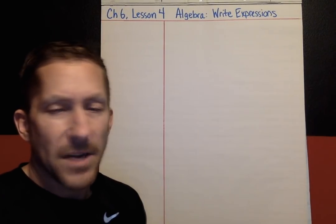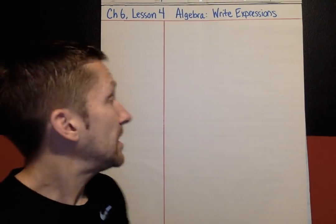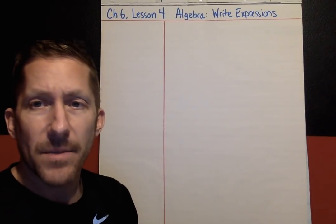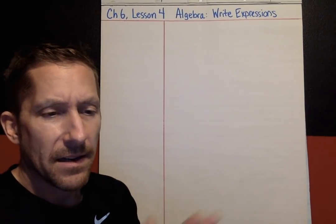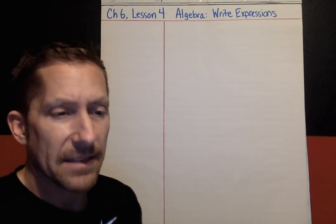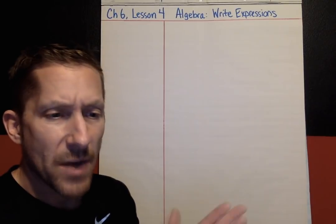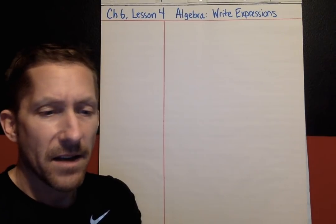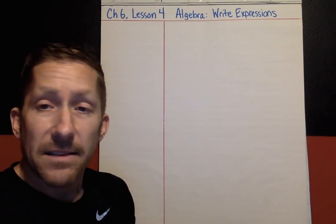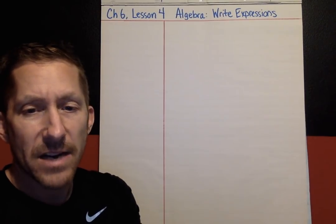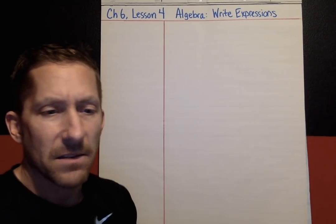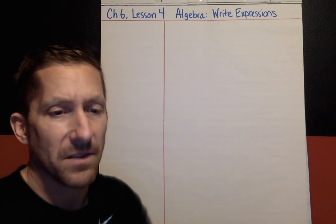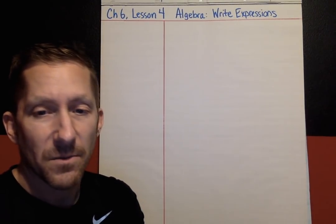Hey there, boys and girls. This is Chapter 6, Lesson 4. The title is 'Algebra: Write Expressions.' Lesson 4 really builds on the inquiry lab that you did in the previous lesson. There wasn't a video lesson for that, but in your book you practiced building and writing some expressions after building models from a story or word situation. Today's lesson builds on that, and we are getting into what I think is really the heart of algebra: translating real-life situations into mathematical expressions.